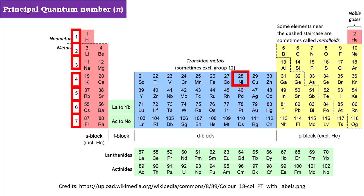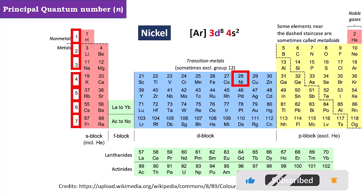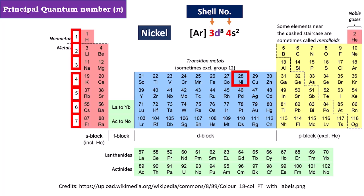Let's consider any one element from the periodic table, nickel. Nickel has electronic configuration 3d8 4s2. As you see in this electronic configuration, the highlighted numbers represent the value of principal quantum number. Thank you for watching this video.